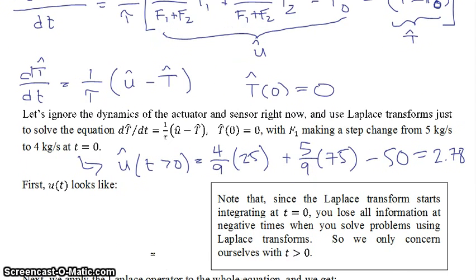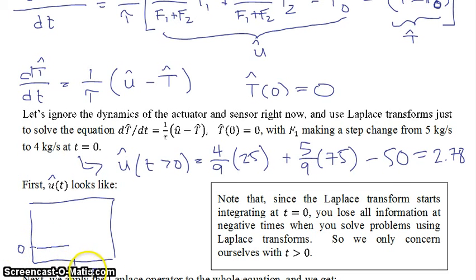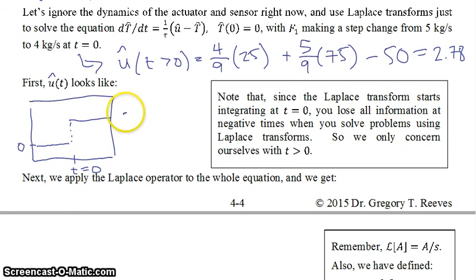So u-hat as a function of time starts off at zero, and then at t equals 0 makes a step change up to 2.78. For now we're going to call that constant capital A — the amplitude of our step change.